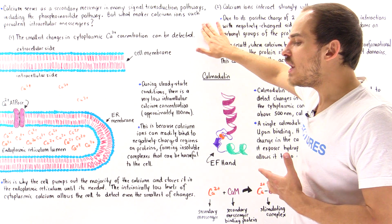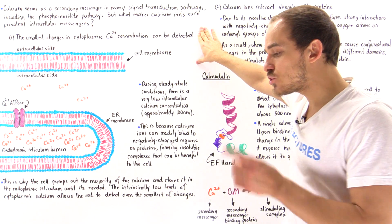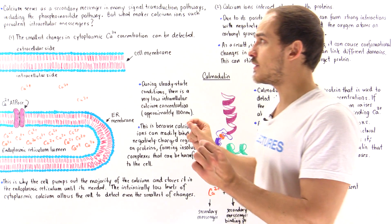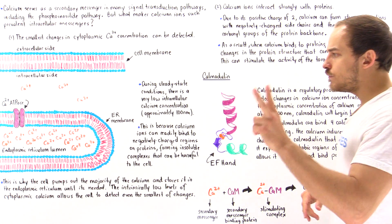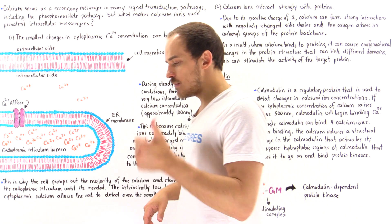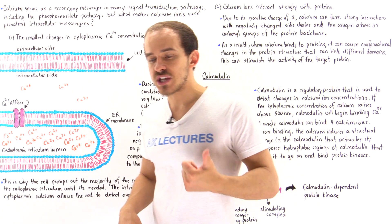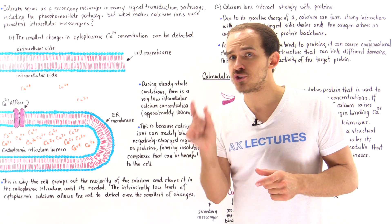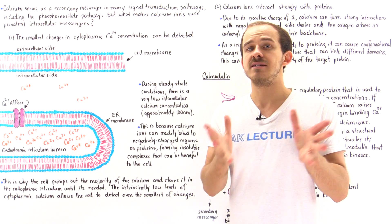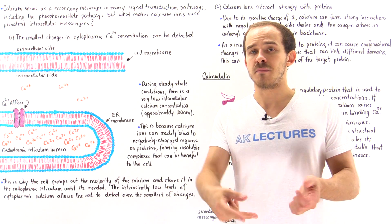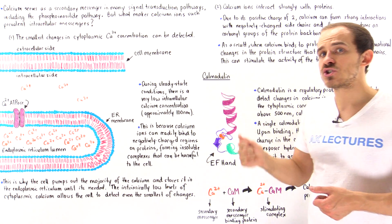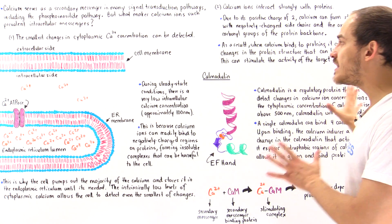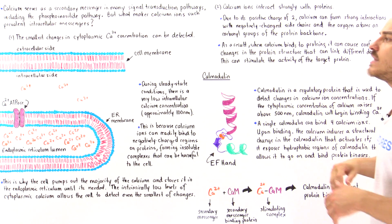The question is: what is it about calcium that actually makes these calcium ions such prevalent and good intracellular secondary messengers? There are two facts about calcium that make them so prevalent. Number one is our cells can actually easily detect even the smallest changes in calcium ion concentrations inside the cell in the cytoplasm. Number two is calcium ions can actually form very strong interactions with proteins.